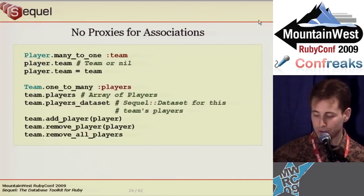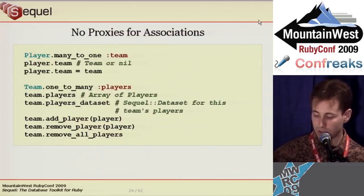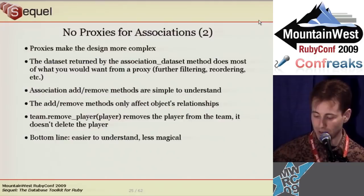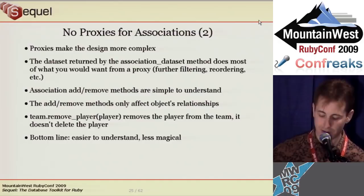Sequel does not use proxies for associations. The many-to-one association returns either the associated object or nil, and the to-many association method always returns an array. Most uses of a proxy can be handled using the association_dataset method, which returns a dataset you can filter, reorder, or otherwise modify. The many-to-one association adds a setter method, and the to-many associations add add_association, remove_association, and remove_all_association methods.